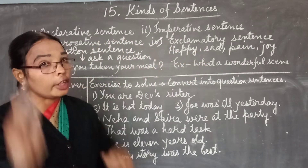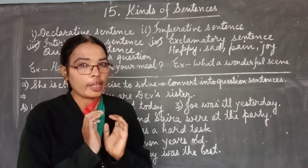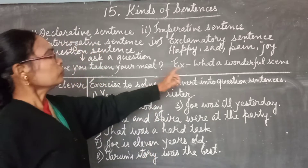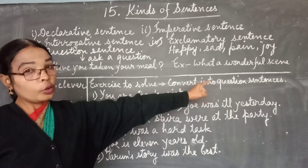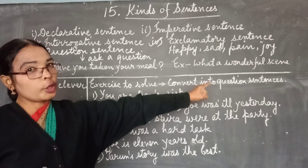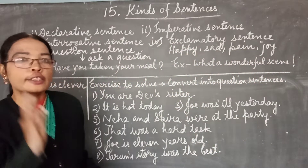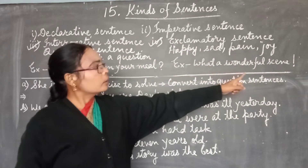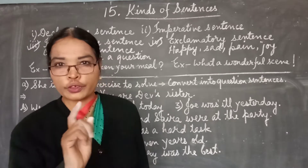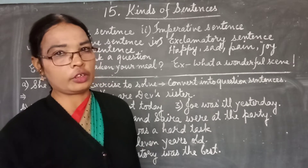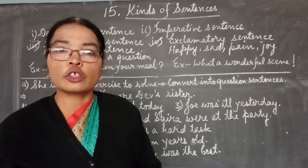For the exclamatory sentence, you have to remember that some special punctuation is used. For example: 'What a wonderful scene!' After 'scene,' there is no full stop, no question mark. You have to put an exclamation mark. If you see any sentence ending with an exclamation mark, that type of sentence is called your exclamatory sentence. In those types of sentences, we are expressing our emotions or feelings to others.